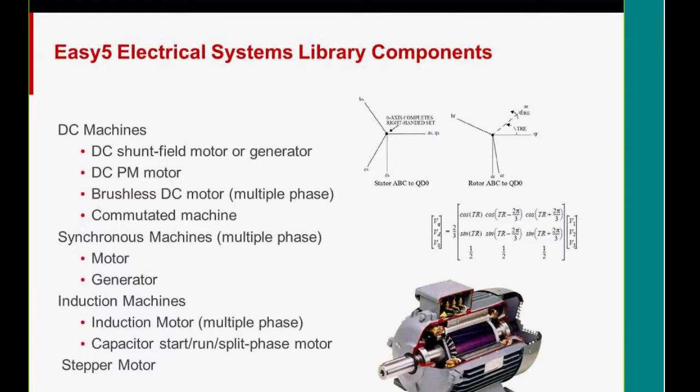So what is in the electrical systems library? We have a number of machines, DC machines. You have shunt field motors and generators, permanent magnet motors, brushless DC motor, and commutated machines. And many of these machines are multiple or single phase. You can select what you want. For synchronous machines, we have motors and generators, induction machines, capacitor start run motors, and a stepper motor for doing actuation. And those pictures up at those diagrams on the upper right there are actually from our documentation.